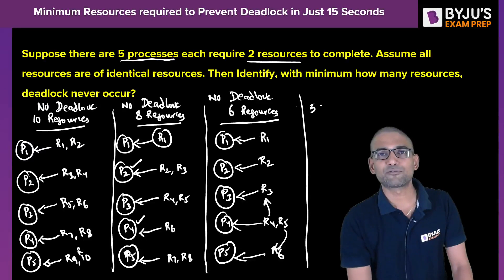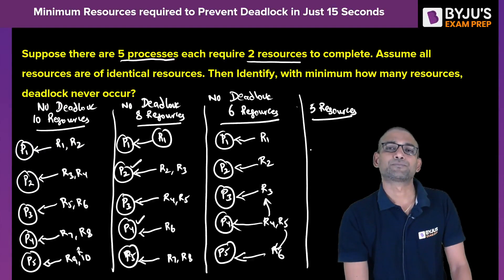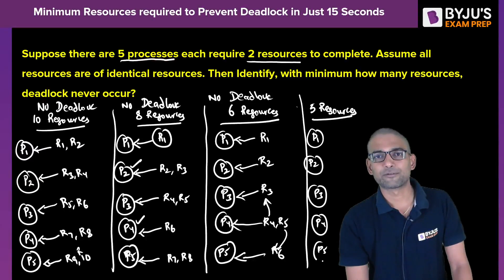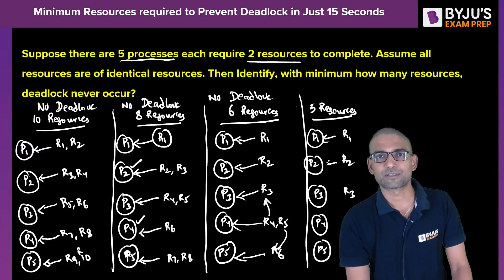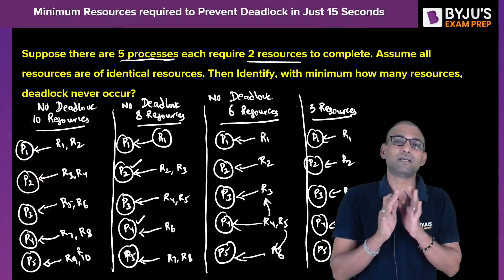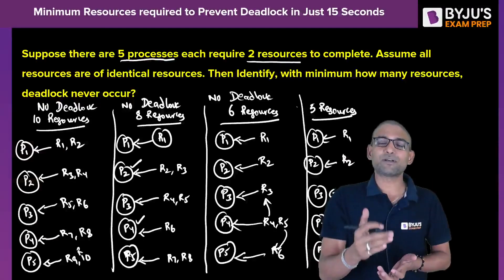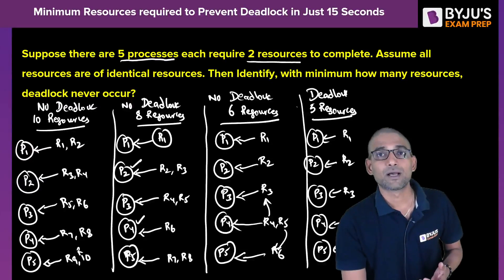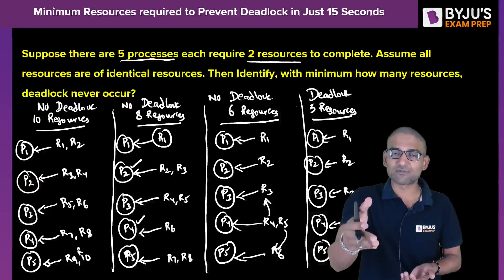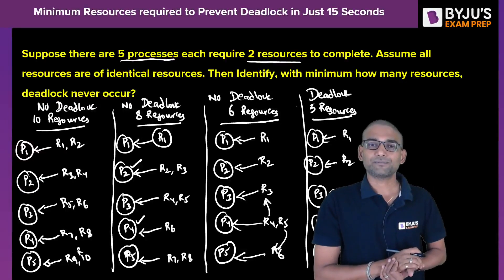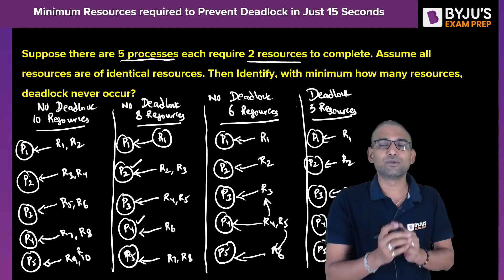Let's try with five resources for five processes. The worst-case allocation is one resource to every process. Now every process is waiting for one more resource, we have no resources available, and no process is completely fed — so every process waits indefinitely. This is deadlock. With five resources we cannot guarantee that deadlock never occurs, because this allocation leads directly to deadlock. So the minimum number of resources to prevent deadlock is six.